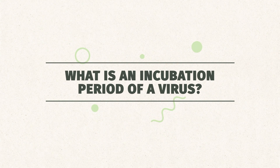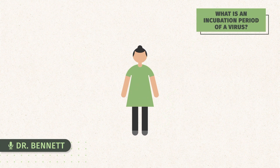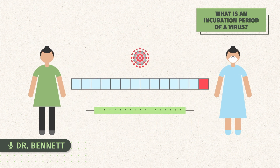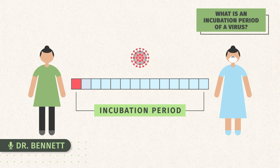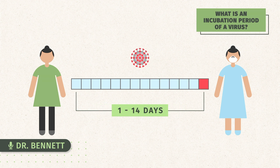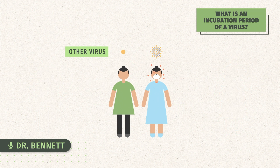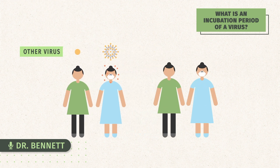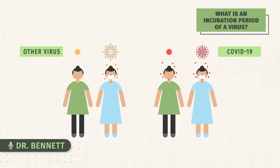What is the incubation period of a virus? The incubation period is the time between when a person is exposed and infected to when they develop symptoms. The challenge with this coronavirus is that period is highly variable, spanning anywhere from 1 to 14 days. In some cases, the incubation period is a time when viruses are not being efficiently spread from person to person — but that is not the case with COVID-19. People who are still incubating the virus prior to developing symptoms can infect other people.